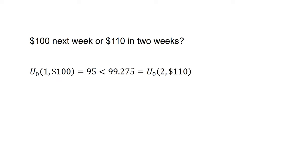The set of decisions across choice one and choice two are time consistent. If the exponential discounting agent selected $110 in two weeks for choice two, and was given a chance to change their choice after one week — which is effectively an offer of choice one — they would not change their decision.